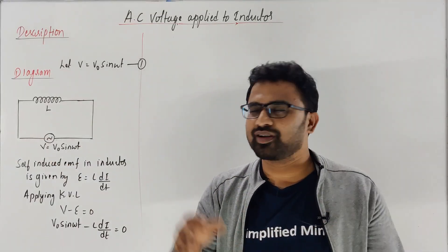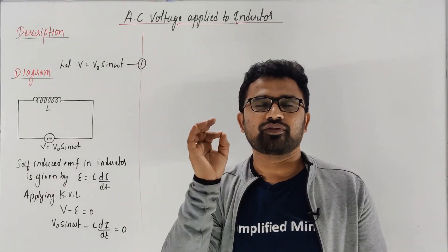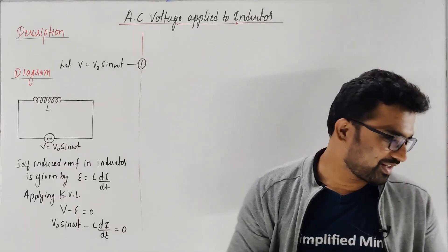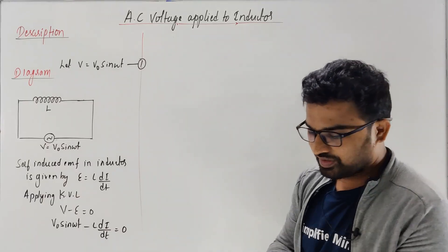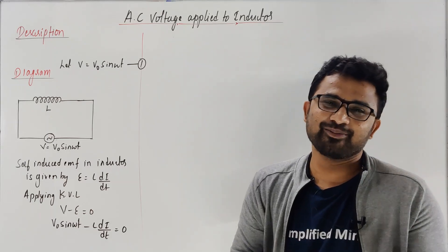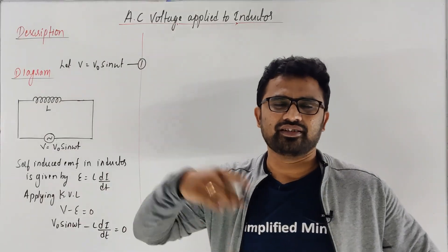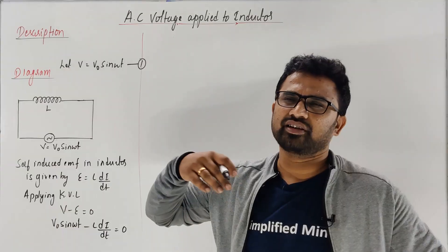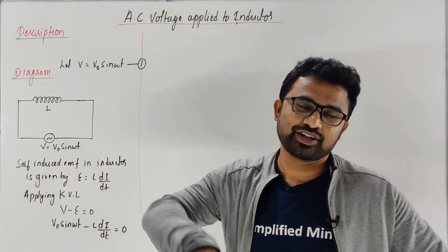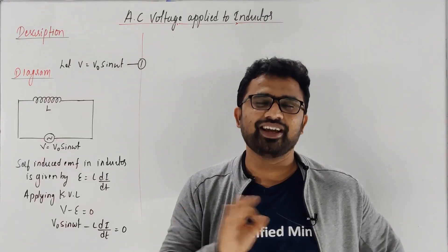Whenever inductors and capacitors and LC oscillations come — it's a very beautiful chapter, actually. AC currents — one of the beautiful chapters — and everything works on AC currents. Tesla, you know, my favorite scientist. I also made a video long back about Tesla's biography. And other derivations from other chapters — I'll give all the links in the description box, please go and check. Okay, let's come to this topic now.